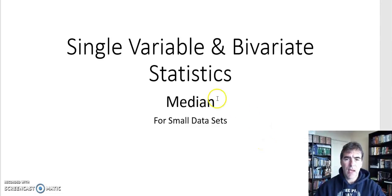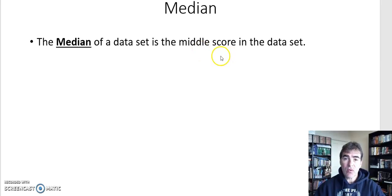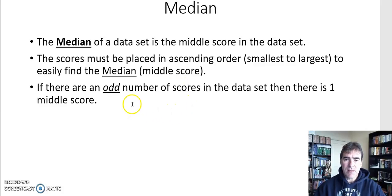In this lesson we're going to look at how we find the median for small data sets. First of all we need to know what the median is — the median is the middle score in the data set. It may not necessarily actually be one of the scores, and we'll look at why shortly. But first we must place the scores in ascending order, meaning smallest to largest, and that makes it easier to find the middle score. Now there are two situations we need to consider.